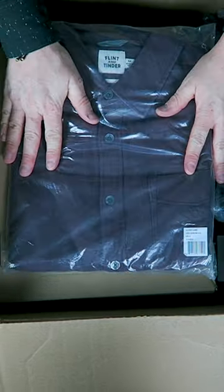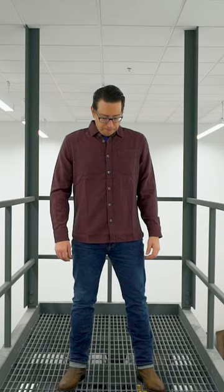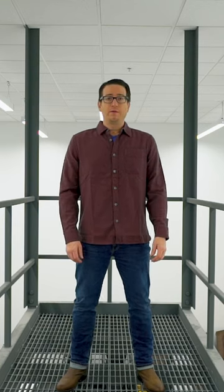Next we have the Flint and Tinder Jackson flannel. This is the dark auburn colorway. Now this one is a little bit thinner. This is like a regular shirt as opposed to the work shirt.